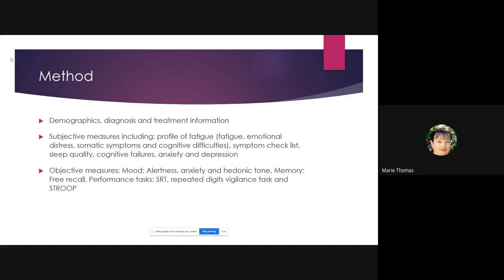When we refined the testing schedule, we looked at demographics, diagnosis, and treatment information. Subjective measures included the Profile of Fatigue — covering fatigue, emotional distress, asthmatic symptoms and cognitive difficulties — a symptom checklist, sleep quality, cognitive failures, and anxiety and depression. For objective measures, we used mood (alertness, anxiety, and hedonic tone), free recall, response times, the repeated digits vigilance task, and the Stroop task. We got the testing schedule down to approximately 15 minutes.